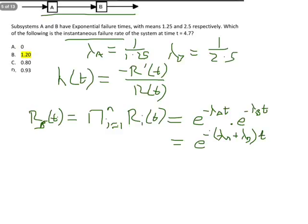And you can see if you had three or four, you'd just add up all the lambdas—it would be e to the minus sum of all the lambdas times t. So that's the reliability.